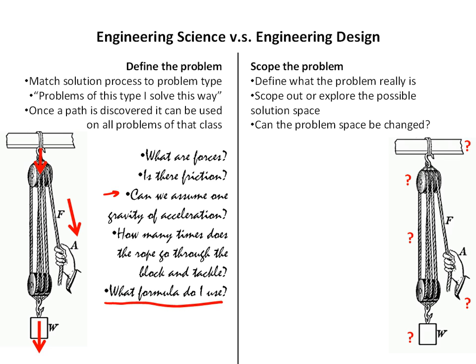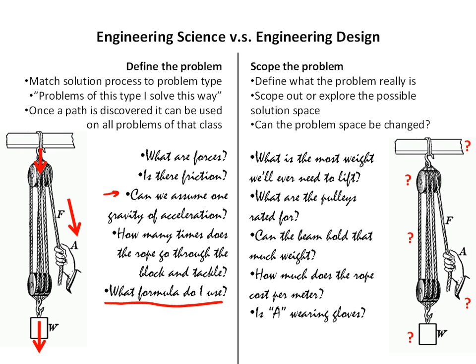An engineering designer, on the other hand, would not just look at forces. Instead, we're going to scope the problem space and ask very different questions: What's the most weight we'll ever need to lift? What are the pulleys rated for — if I use pulleys with too low a rating for the weight, the whole thing can come crashing down, and then I've got a lawsuit. Can the beam hold that much weight? How much does the rope cost per meter, because staying within cost constraints matters. And is the hand wearing gloves? That's a legitimate question because it's a safety concern, and in engineering design, safety is one of the constraints we're required by law and by ethics to follow.